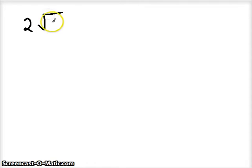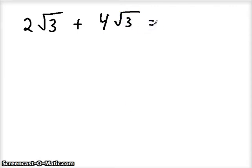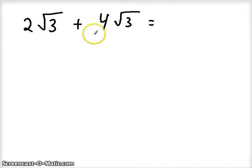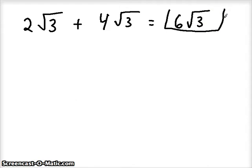Let's add two square roots of three to four square roots of three. Check to make sure the index is the same — we're doing square roots for both, so good. Check to make sure the radicand is the same — we have threes in both, so good. We can go ahead and add the coefficients: two and four give me six. So the answer is six square roots of three.